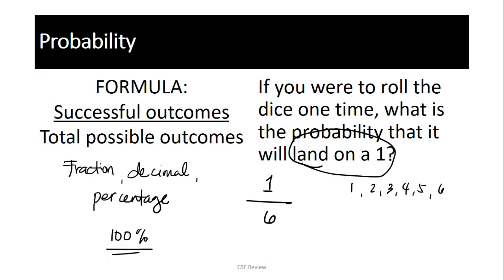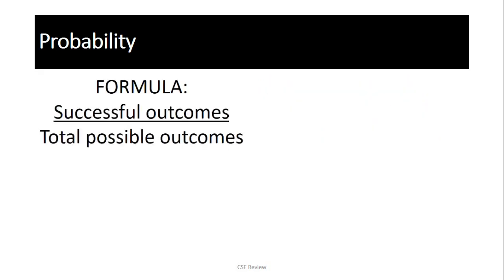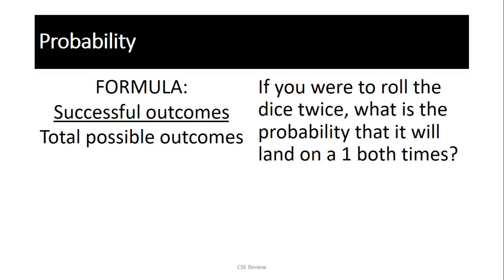Ngayon, ang problema sa probability questions is that, okay, sana kung ganito ka basic yung tanong. Pero, paano kung ganito? Okay? Again, same formula. Sabi, if you were to roll the dice twice, what is the probability that it will land on 1 both times? So, again, 1 pa rin yung target natin. Kaya lang dalawang beses ka na mag-roll. Now, the thing with probability is the number of times ka mag-roll, which is twice, determines kung gaano kababa pa yung probability na makaka-roll ka ngayon.